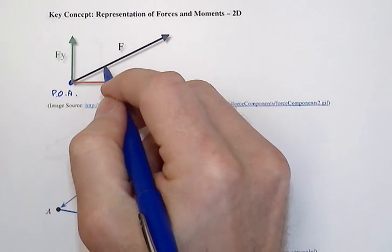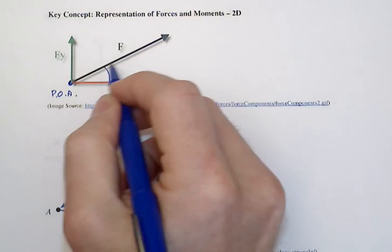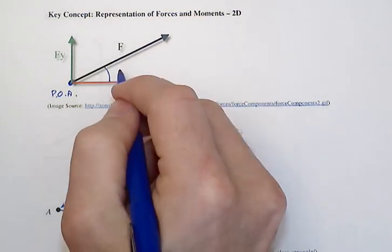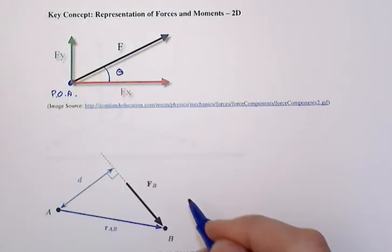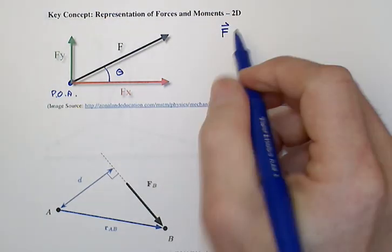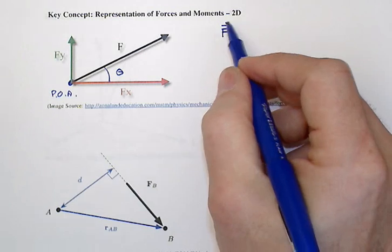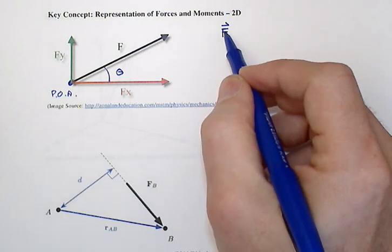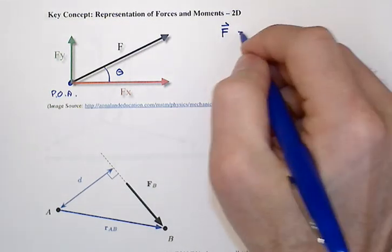Oftentimes, especially in 2D, we simply refer to the direction that the force makes with respect to the positive x-axis. So this force, which now in vector notation would have this little arrow to indicate a vector quantity, will have its scalar magnitude.